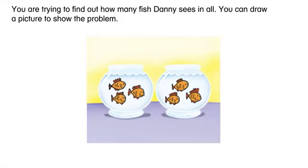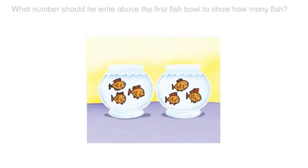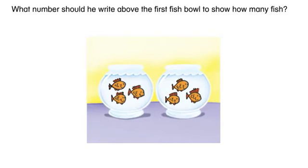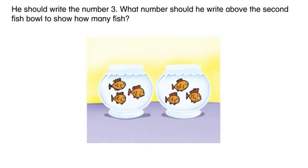You can draw a picture to show the problem. Danny draws three fish in each bowl. What number should he write above the first fish bowl to show how many fish? He should write the number three.